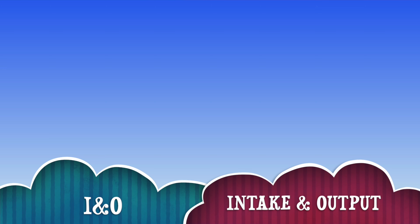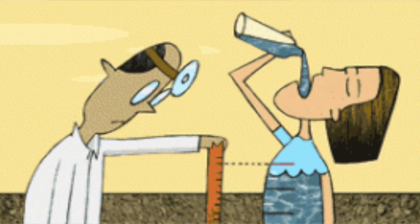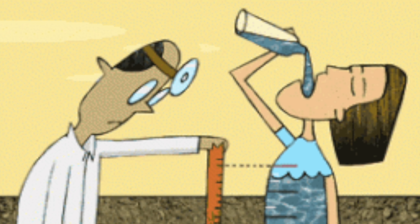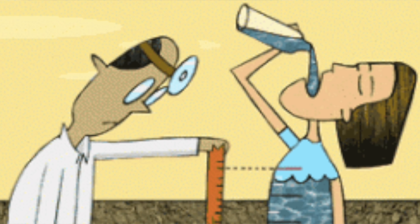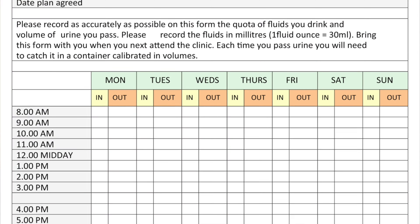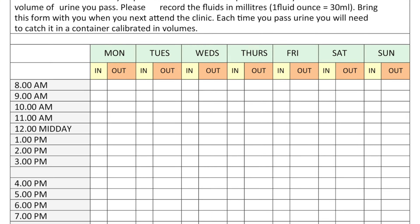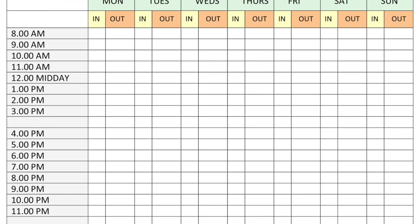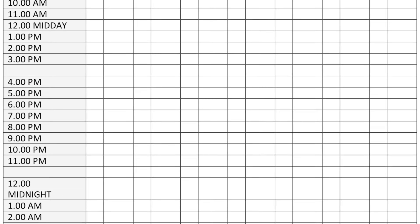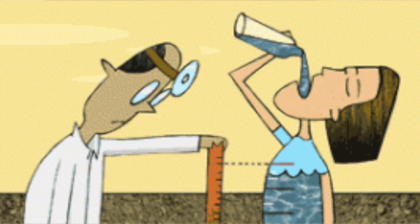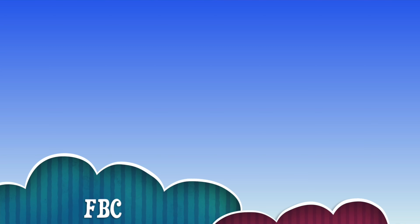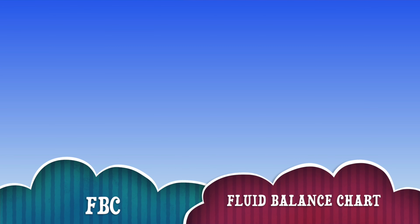The next abbreviation is I&O, which means Intake and Output. You could see in the physician's notes where it says 'monitor I&O' — it just means monitor the intake and output of the patient. You would get a fluid balance chart for the patient, which leads to the next abbreviation: FBC, meaning Fluid Balance Chart.